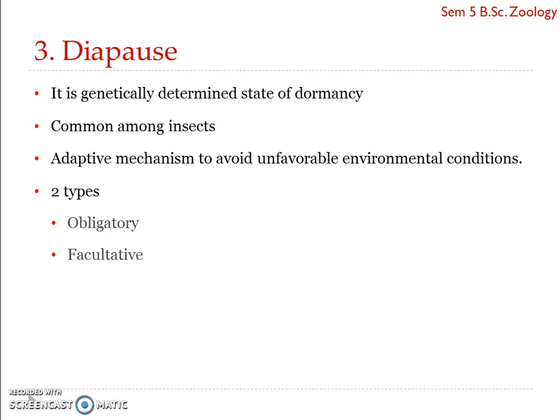We can see diapause in many groups of organisms, but very specifically in the case of insects. There are two types of diapause: obligatory and facultative. Obligatory, as the name suggests, always occurs at a definite stage in an organism's life cycle.